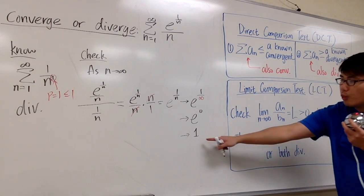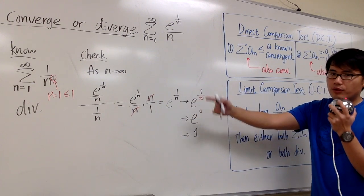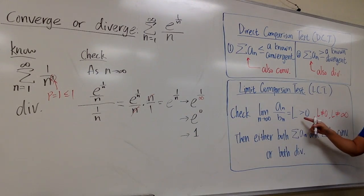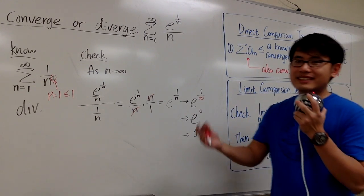As we can see, 1 is the limit of a_n over b_n as n goes to infinity. More importantly, 1 is greater than 0, is not 0, and is not infinity.